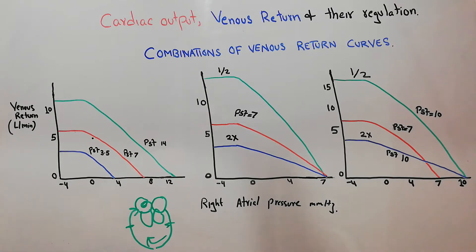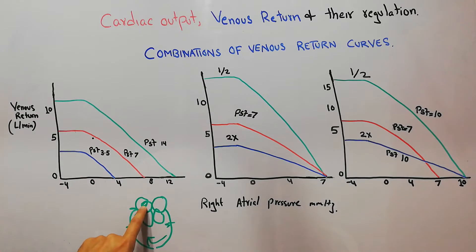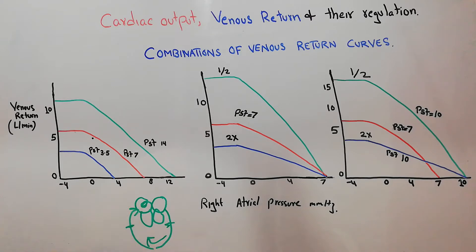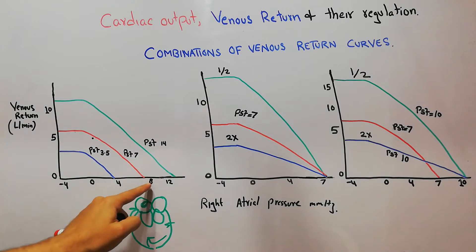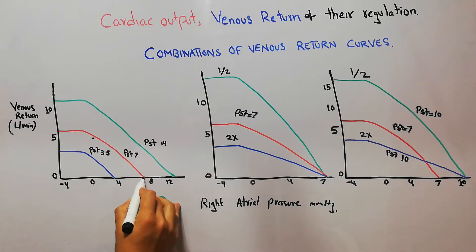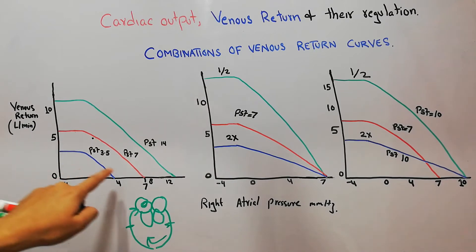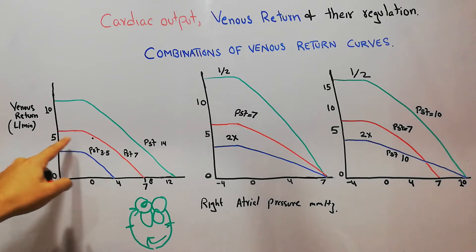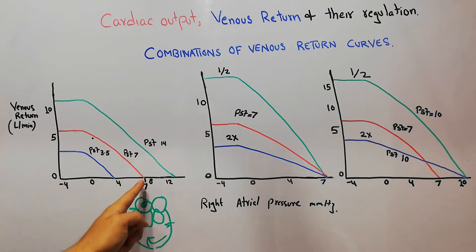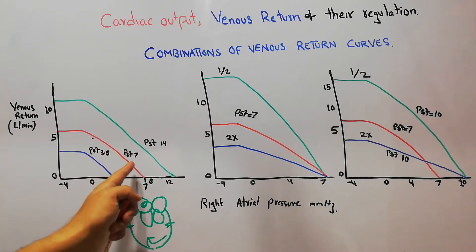If the right atrial pressure starts increasing from zero towards one, two, three, four, five, six, seven — at around a pressure of seven mmHg the venous return becomes zero. So at zero right atrial pressure the venous return was five liters per minute, and at a right atrial pressure of around seven mmHg the venous return has become zero.